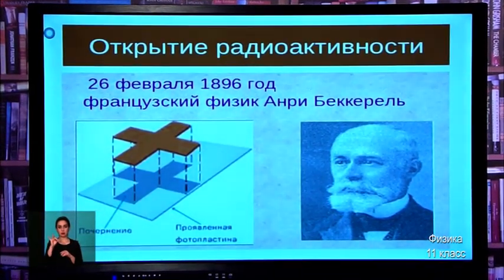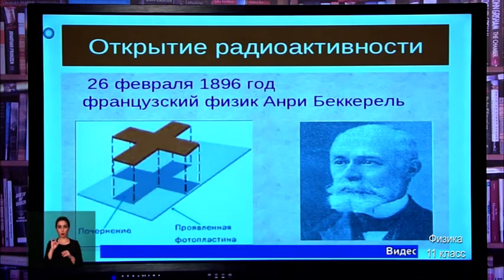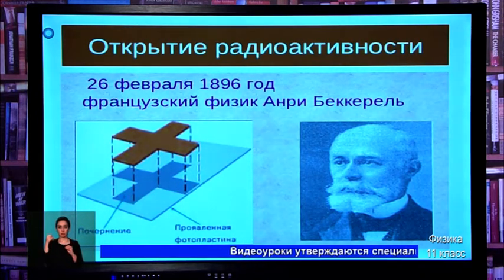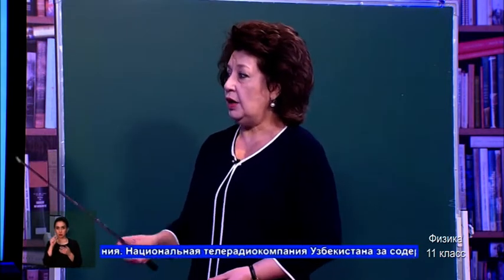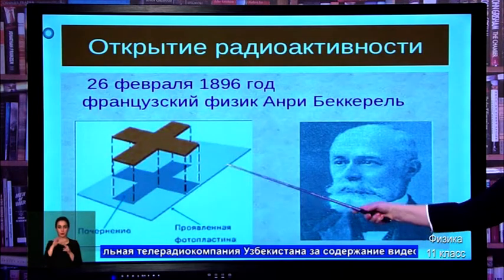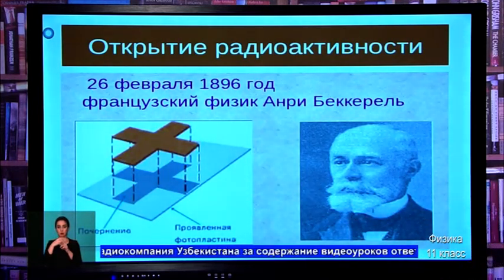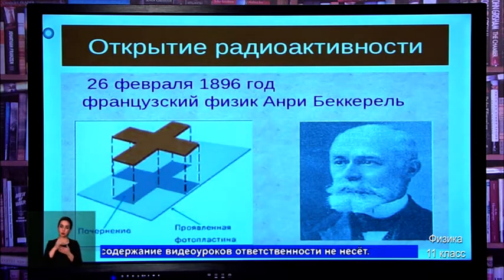He was working with uranium salts. He planned to expose them to sunlight, but the weather turned cold and he decided not to do the research. He left the uranium salts in a box along with photographic film and a metal cross. After a while, he developed the film and found an image of the cross. This showed that uranium salts emit radiation independently of sunlight.